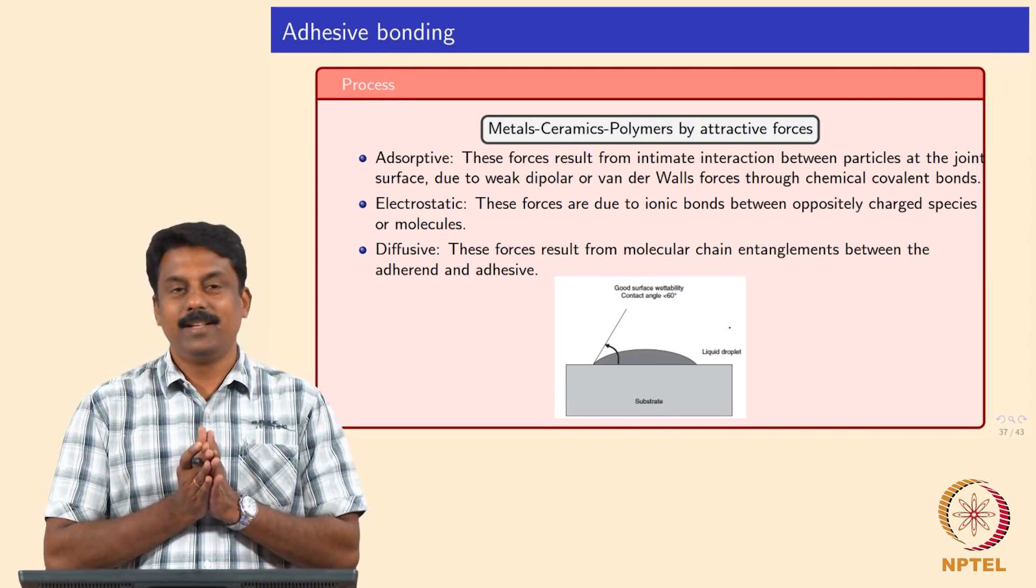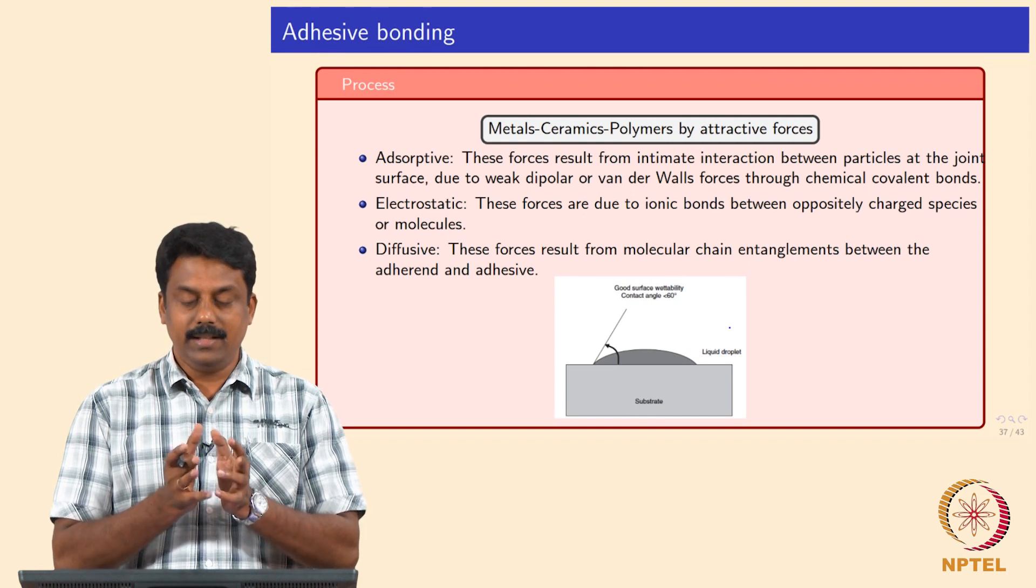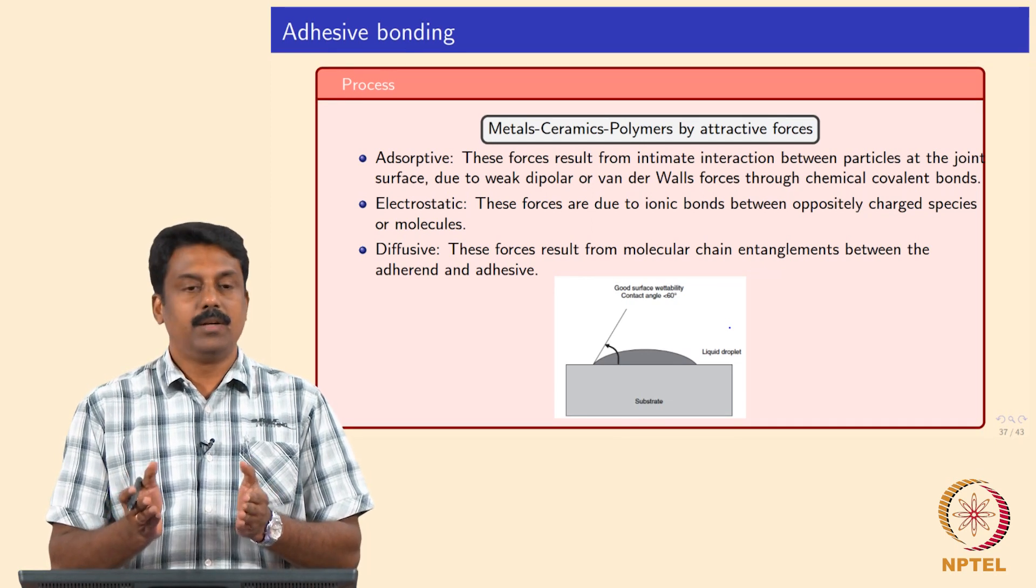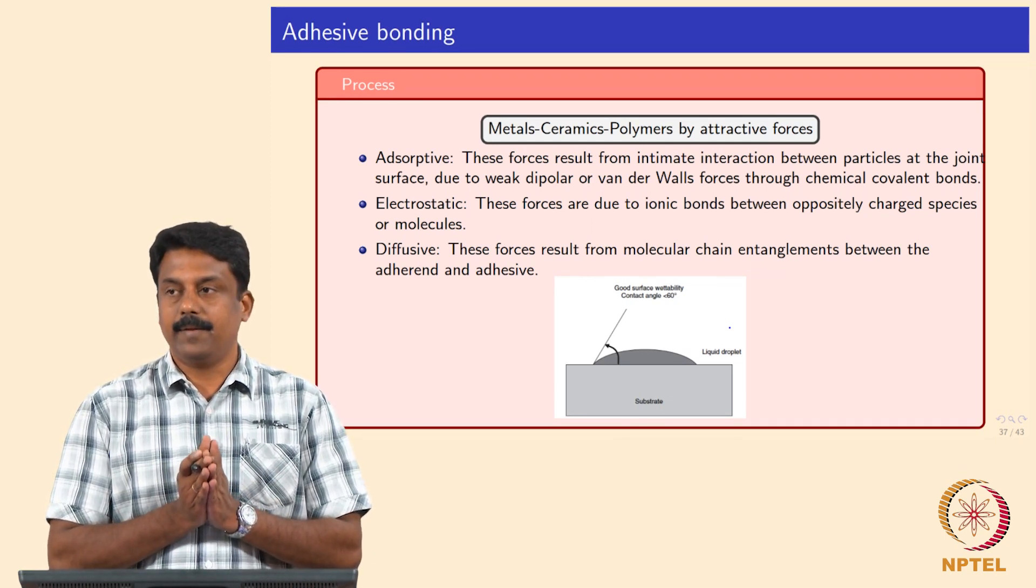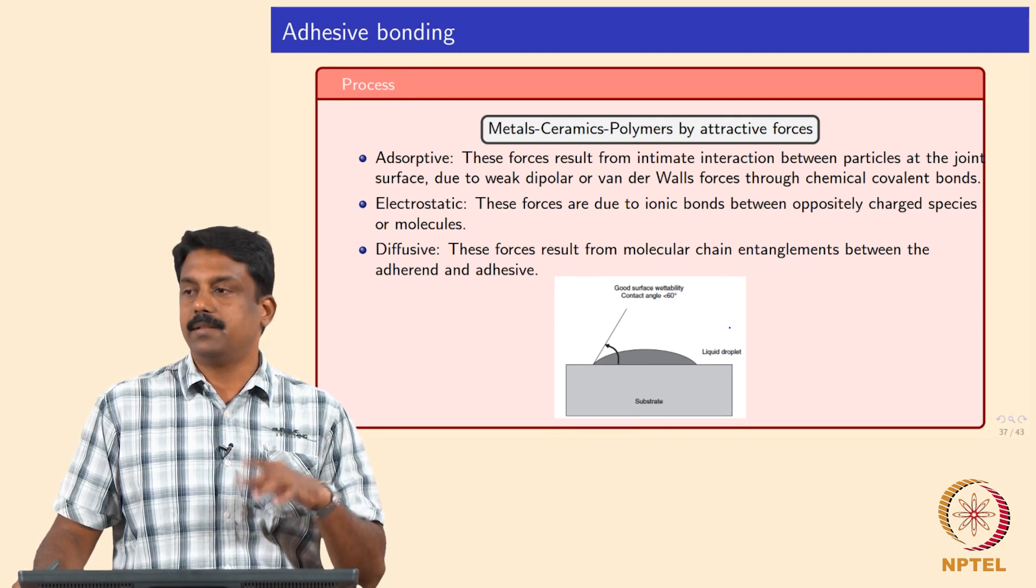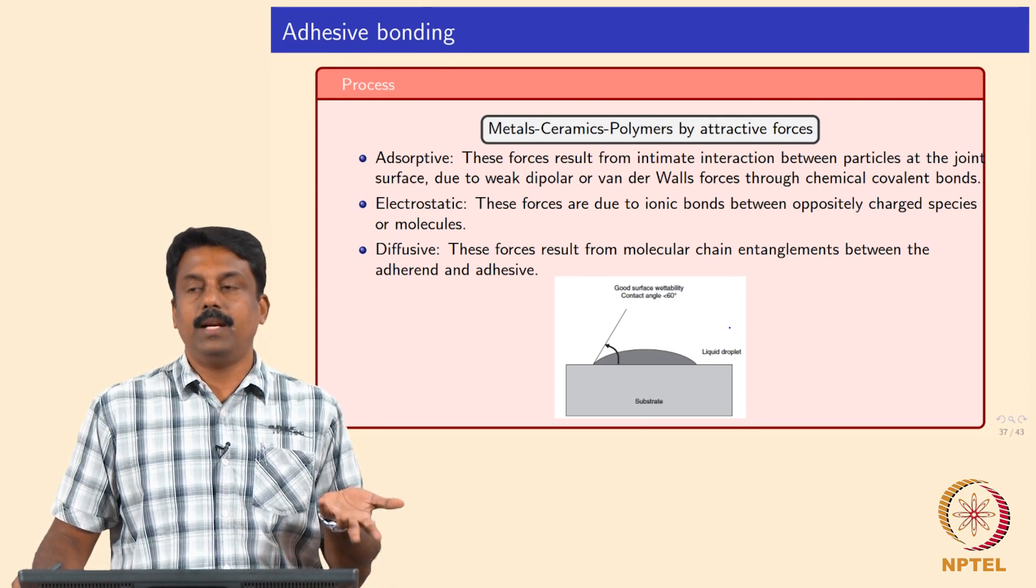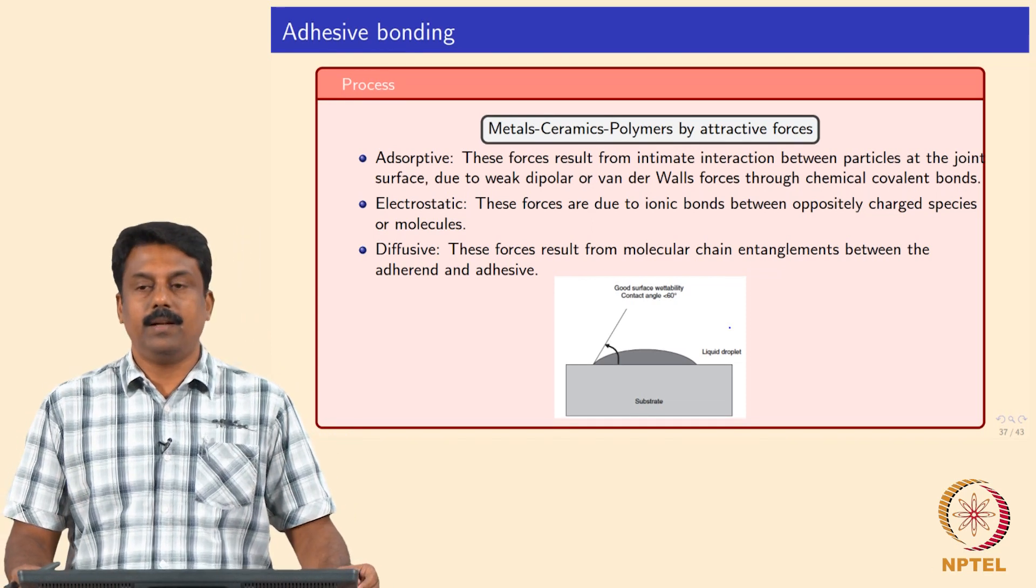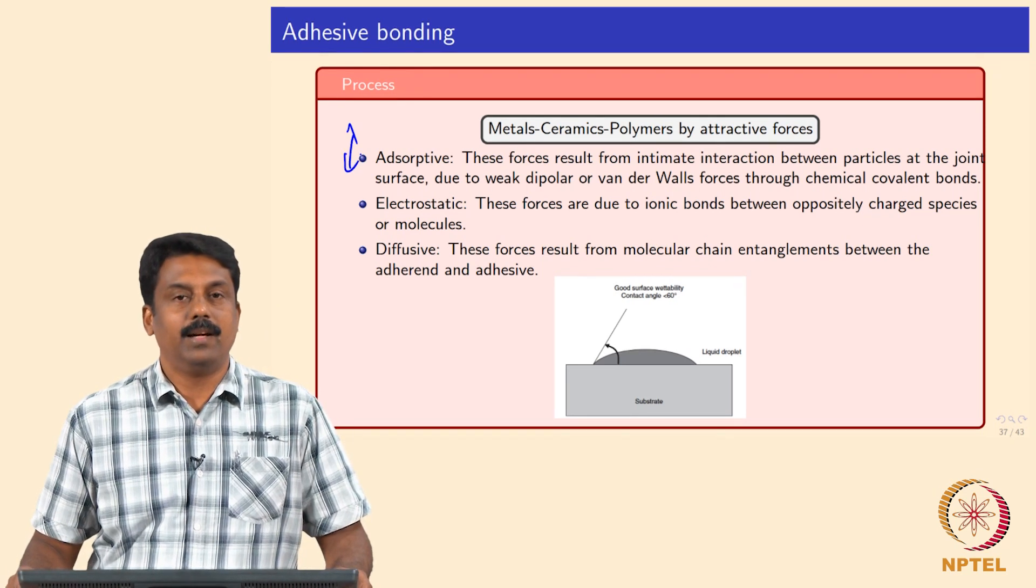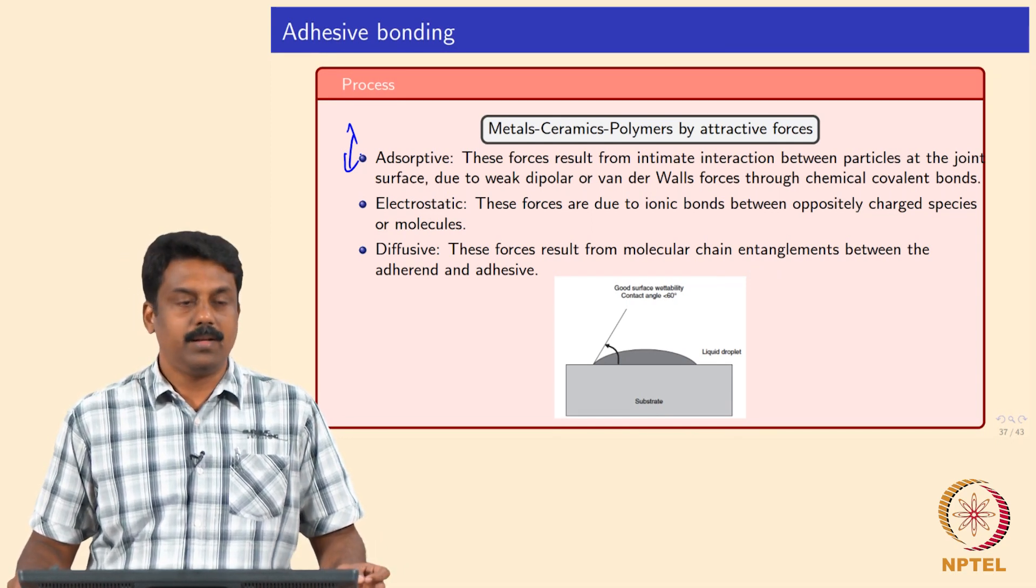The strongest bond you make is by diffusive bonding. Diffusive joints means the adhesive molecules diffuse into the polymers to be joined and you make more of a single diffusible layer at the interface between the adhesive and the faying interface. It results from complete molecular chain entanglement between the faying interface and the adhesive.